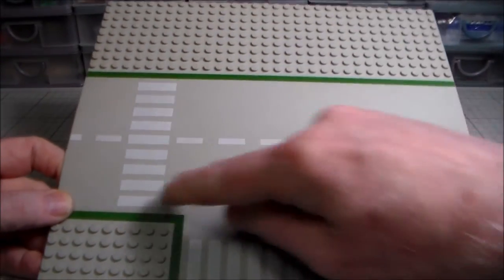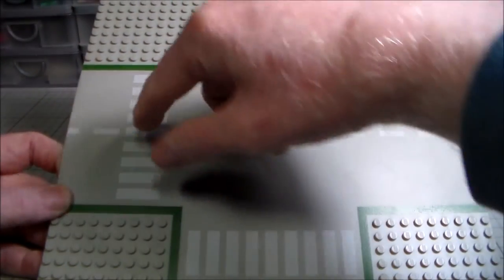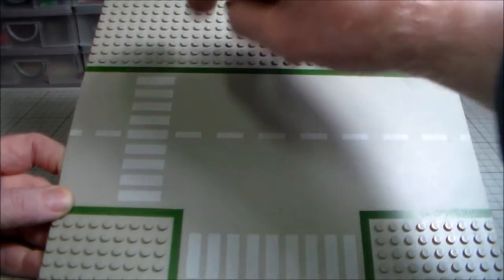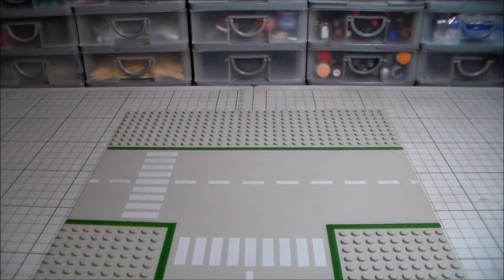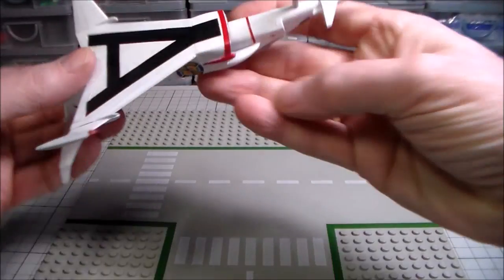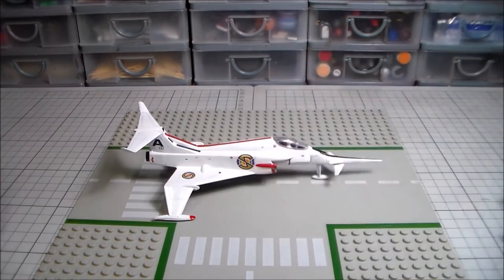There we go. And as you can see, it's got these, it's really a road. But because it's got these striations, is that the word, or markings, it does look a bit like a runway. So when you put an aircraft on there, let's put this one back on there.